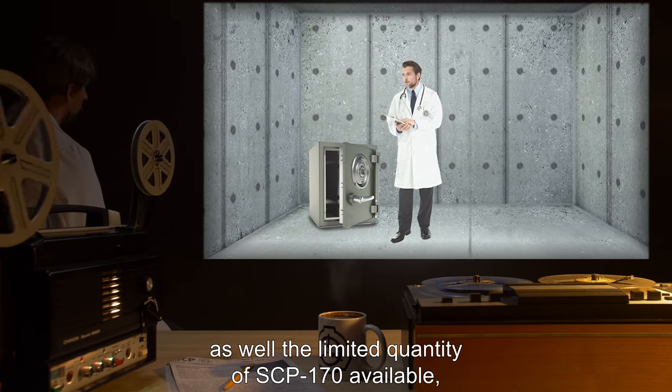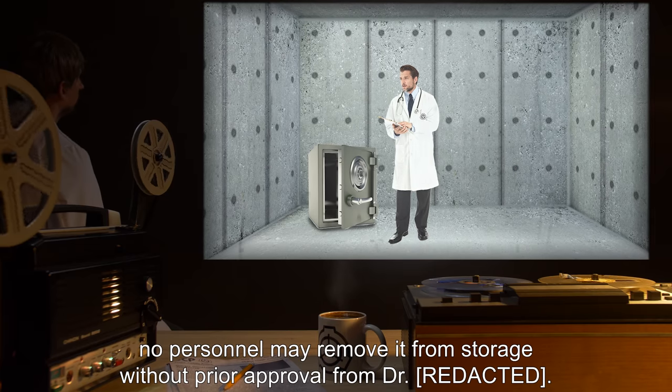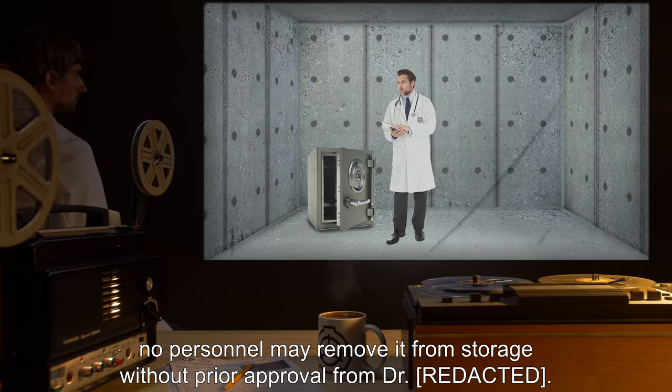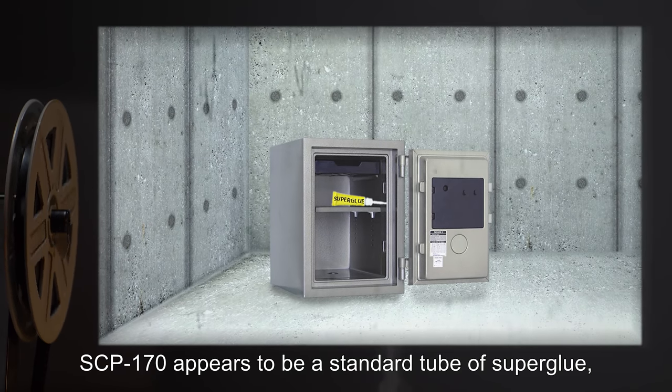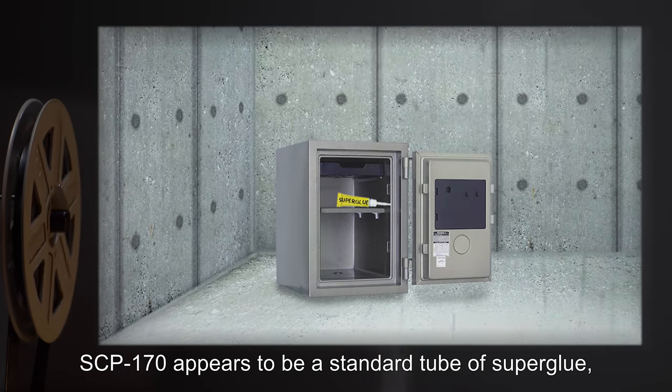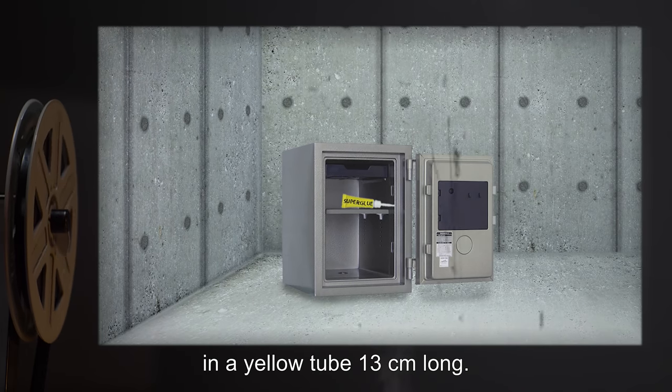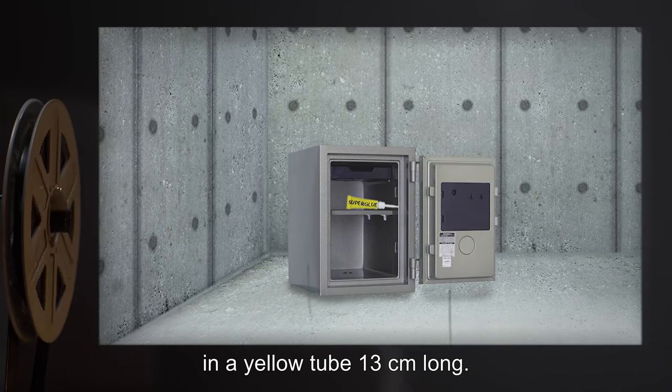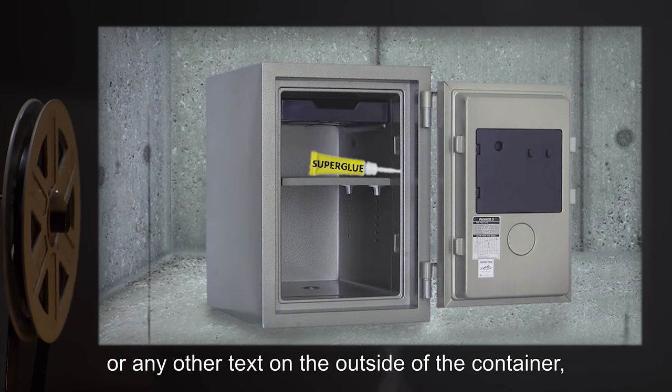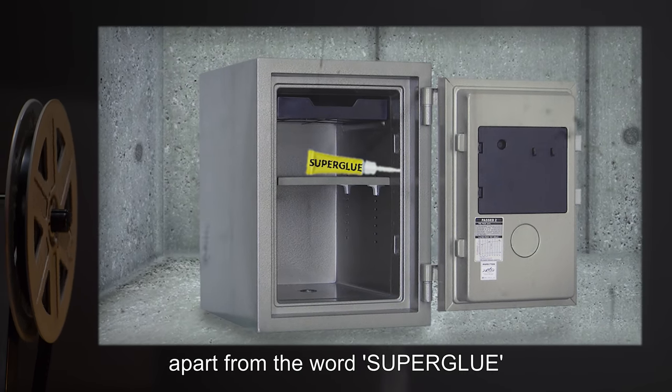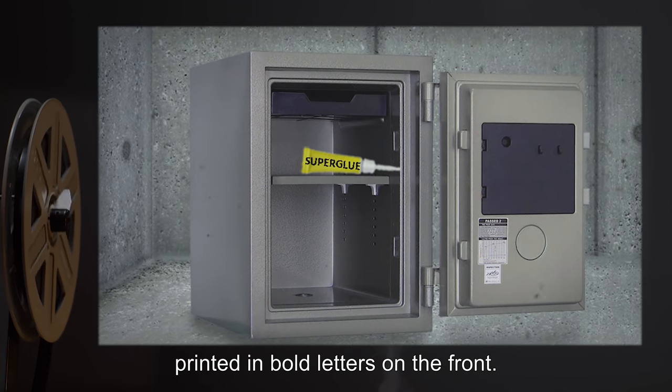Description: SCP-170 appears to be a standard tube of super glue in a yellow tube, 13 centimeters long. There is no manufacturer information or any other text on the outside of the container apart from the word "super glue" printed in bold letters on the front.